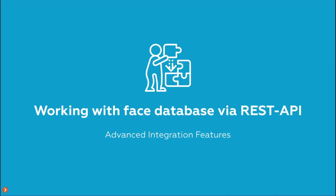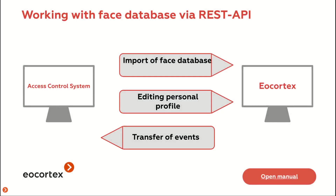Two-factor authentication doesn't require deep changes to two systems. There is a database of individuals in the access control system, and this database is sent to EO Cortex. REST API allows you to import the database into EO Cortex, or vice versa, to export it and set up interaction between systems. When a person appears in frame, the face recognition module compares them with the database and sends the ACS a response on whether the person is recognized. If another factor such as a card also coincides, access is granted.